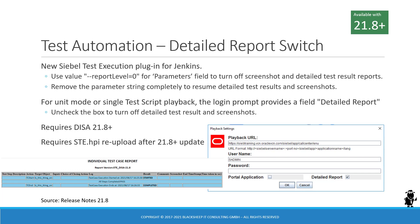Essentially turning the report level down to zero is also available in unit mode when you play back single test scripts from the Siebel client. The login prompt displayed by DISA — again 21.8 is required for this feature to appear — has a new flag in that dialogue called detailed report, which works the same way. You can turn it on or off.